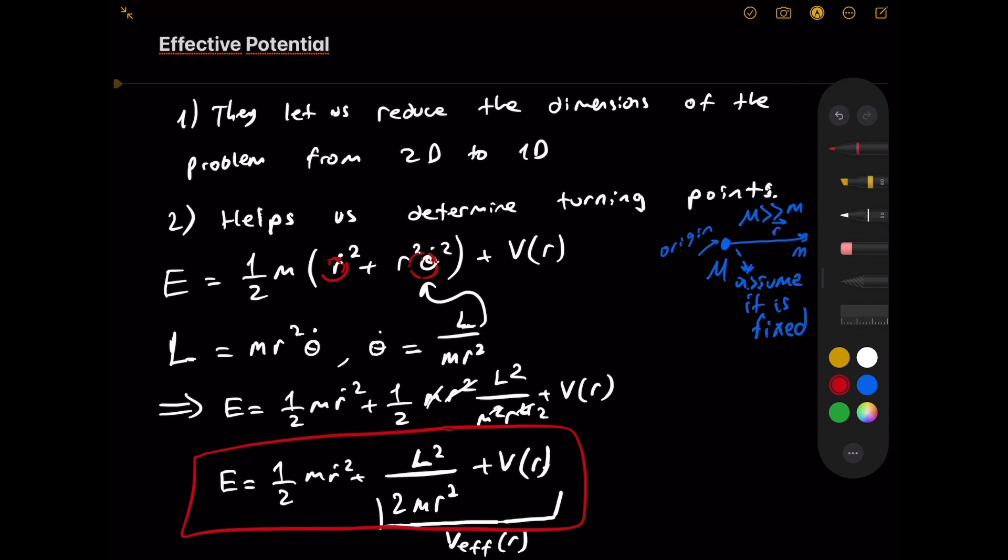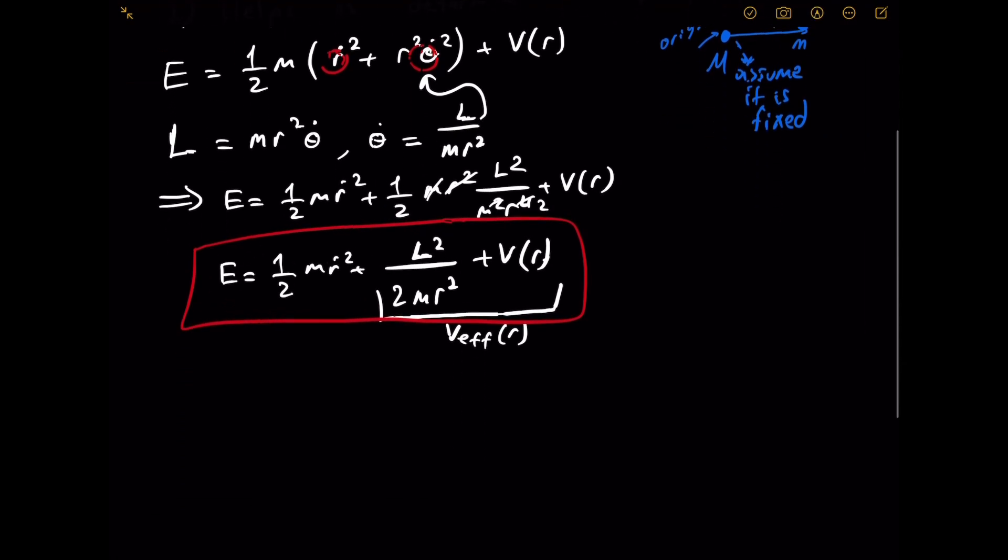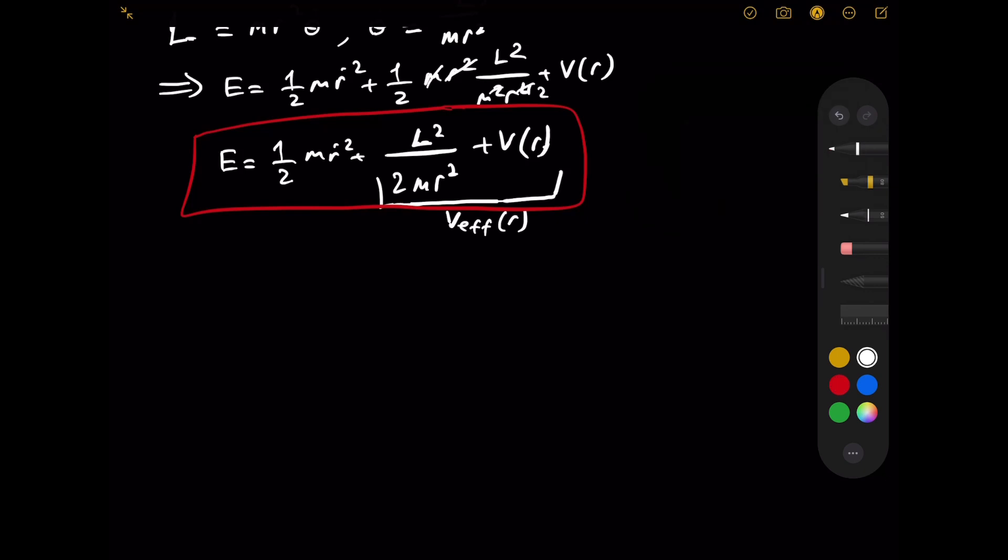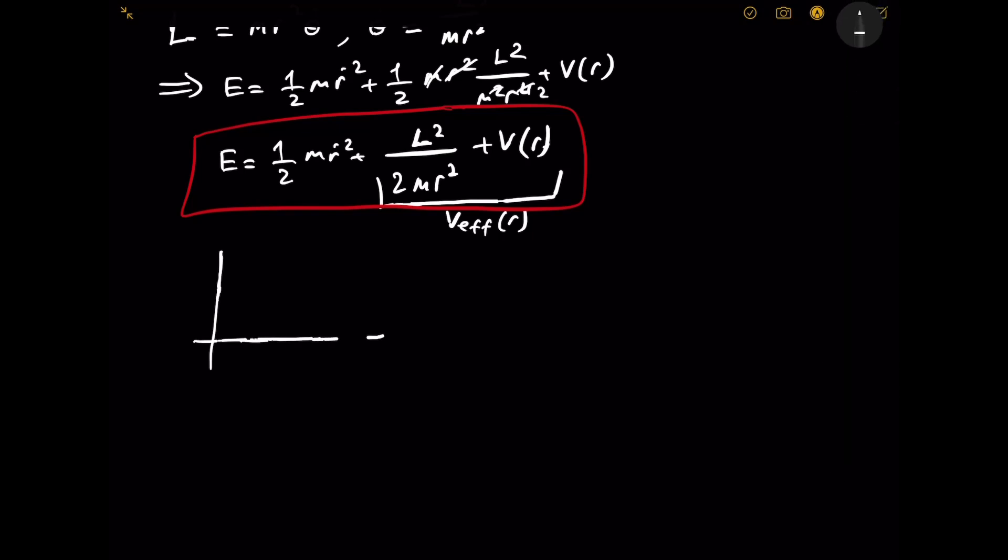Now the second statement, which is maybe even more interesting because it is a lot more visual. If we were to graph this V effective, I'm just going to make a rough sketch. So this is the radius, this is the effective potential as a function of r.